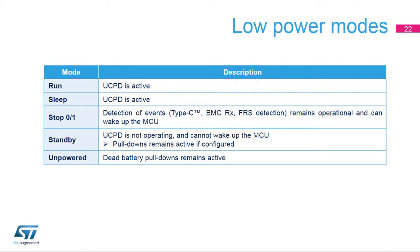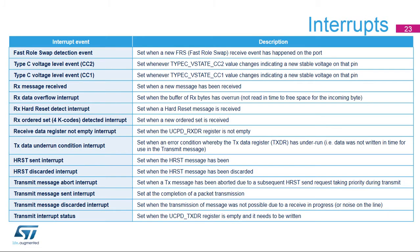Wake-up event sources include Type-C voltage threshold detectors from either CC pin, the Power Delivery receiver signal from the selected CC pin, and the FRS detection signal from the selected CC pin. When an interrupt from the UCPD is received, software must determine the source by reading the UCPD SR register. Depending on which bit is set to 1, the interrupt service routine should handle that condition and clear the bit by writing to the appropriate bit in the UCPD ICR register.